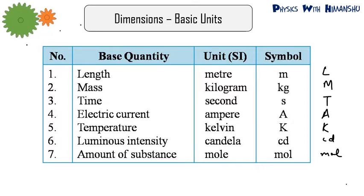We have seven base units in physics: length, mass, time, current, temperature, luminous intensity, and amount of substance. You have to remember the SI unit of all of these and how we represent their dimensions. Length is represented by L, mass by M, time by T, current by A (ampere), temperature by kelvin, luminous intensity by candela (cd), and amount of substance by mol.